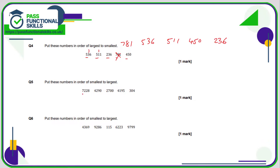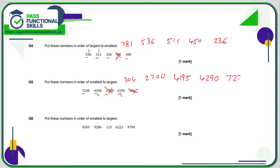Question 5: smallest to largest. We've got four-digit numbers and a three-digit number, so the three-digit number will always be smaller than a four-digit number — so 304 is the smallest. The four-digit numbers begin with 7, 4, 2, 4. The smallest is the one beginning with 2, since 2 is less than 4 and 7. 4 is less than 7, so we compare 4290 and 4195 — both start with 4, so we look at the second digit: 2 versus 1. 1 is smaller than 2, so 4195 comes next, then 4290, and 7228 is the largest.